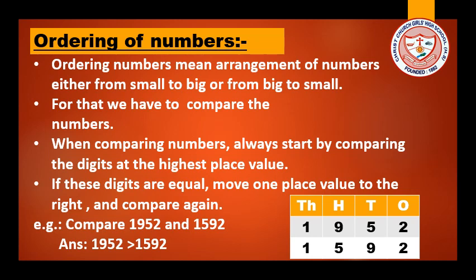So girls, for comparing two numbers, first of all we need to compare the digits at the highest place value — that is 1,000 here in this example. And if these digits are equal, then move one place value to the right, that is 100s here, and then compare again. Please remember this rule.